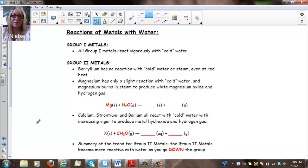Last thing, reactions of metals with water. Group 1 metals react vigorously with cold water. And Group 2 metals, for example, beryllium has no reaction with cold water or steam, even at red heat, even if you had that Bunsen burner turned all the way up. Magnesium only has a slight reaction with cold water and magnesium burns in steam to produce white magnesium oxide and hydrogen gas. So here, magnesium solid reacts with water to produce MgO solid and H2 gas.